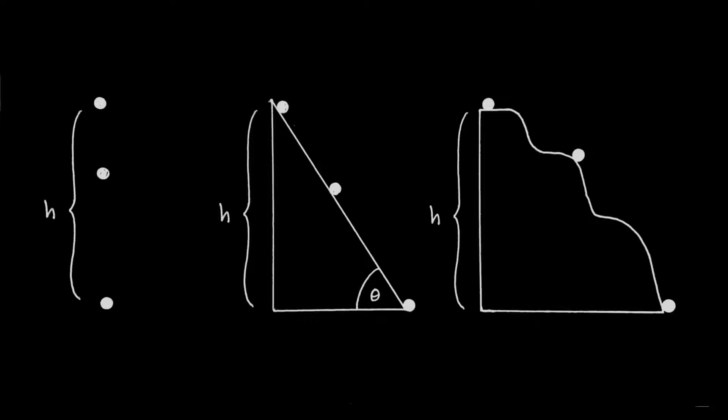The third problem is particularly interesting because it's one I've never been able to solve before. As the object travels from top to bottom — still falling a height h — it travels along a crazy curved path that is very complicated, and I don't even know the math to describe that kind of path. In each of these three cases, I'd like to calculate how much work is done by the force of gravity.